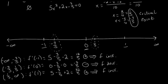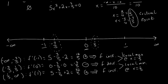We've determined the increasing and decreasing intervals. Now for local max and local min: going from increasing to decreasing gives a local max at that critical point, so we have a local max at x equals negative 3 fifths. Going from decreasing to increasing gives a local min, so we have a local min at x equals 1 fifth.